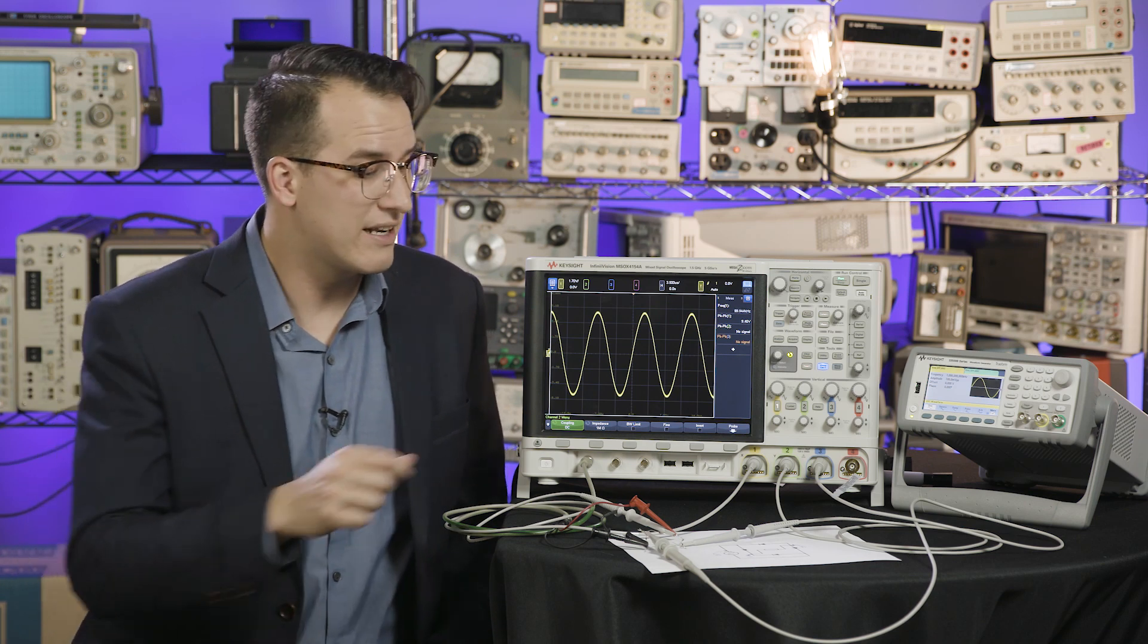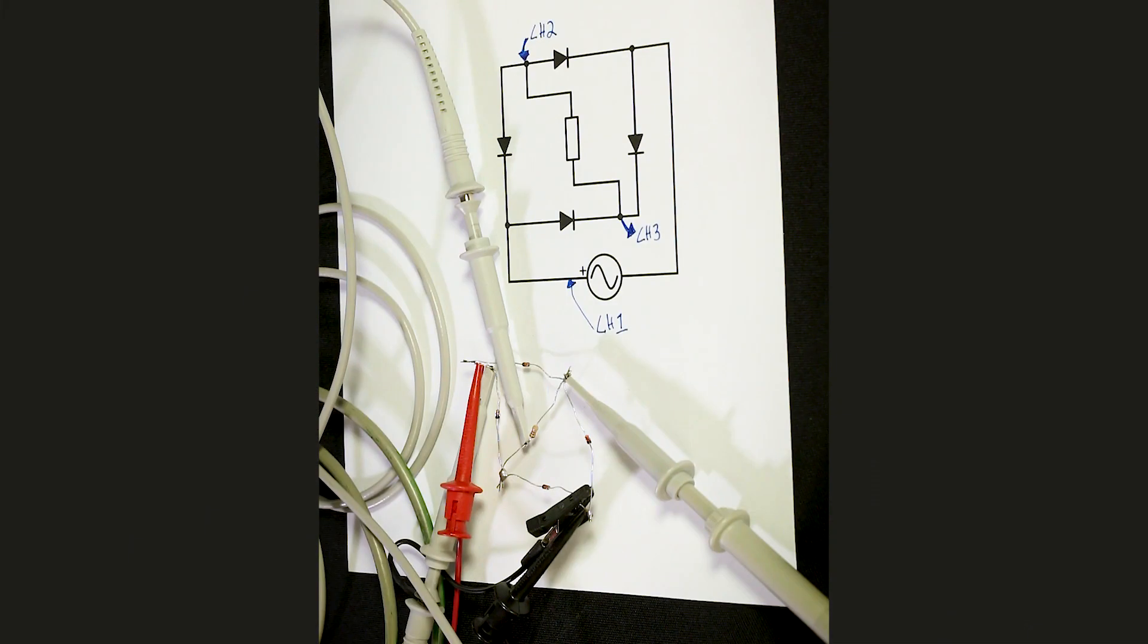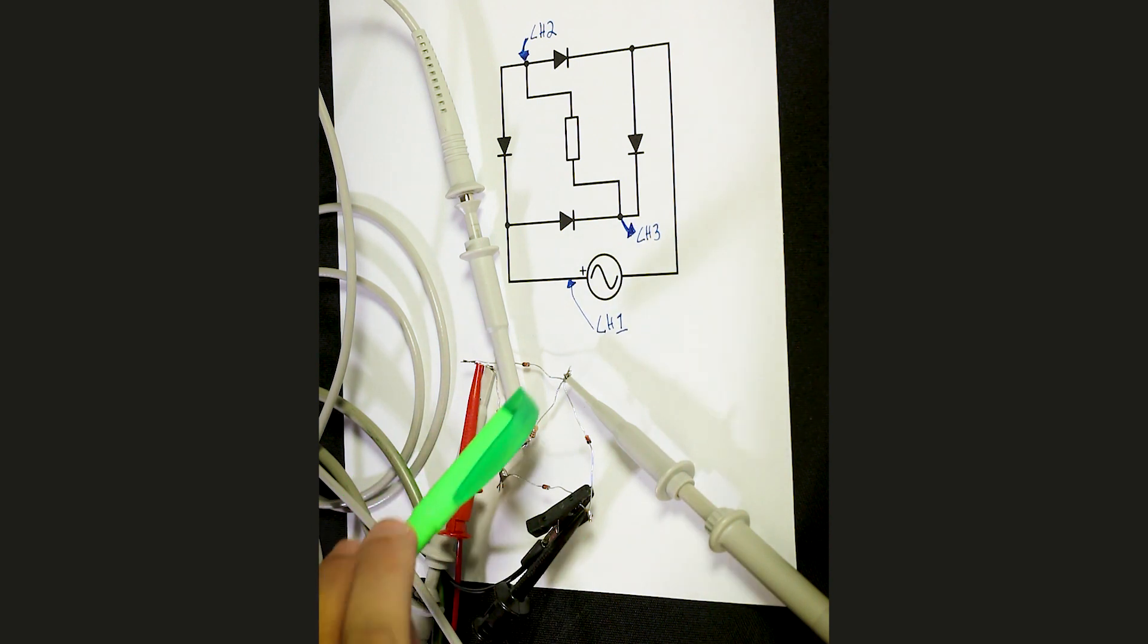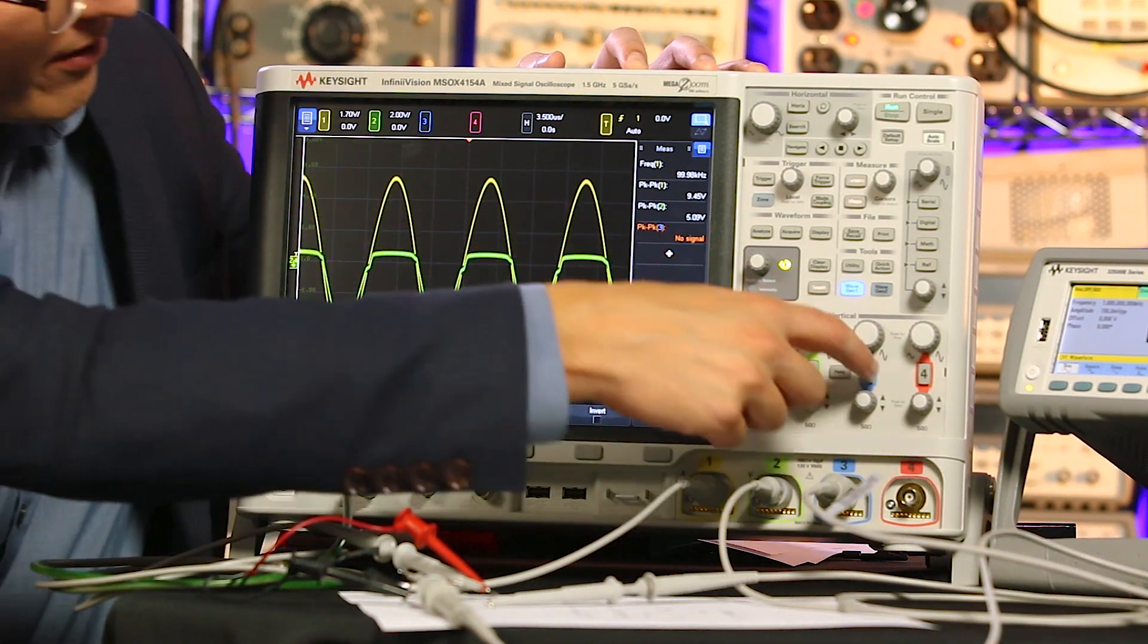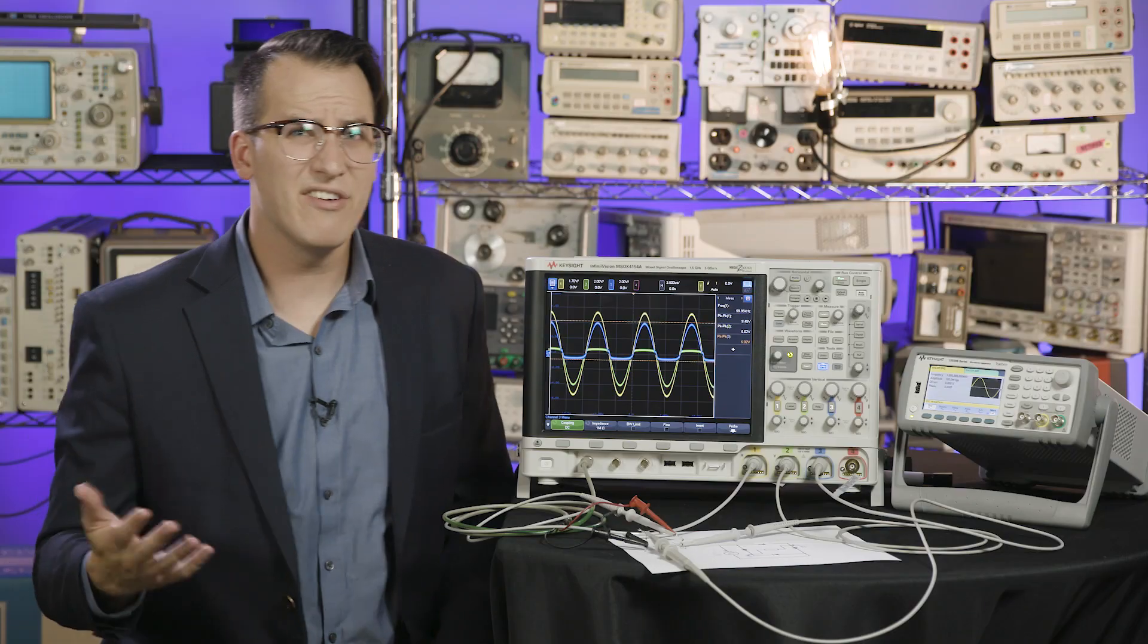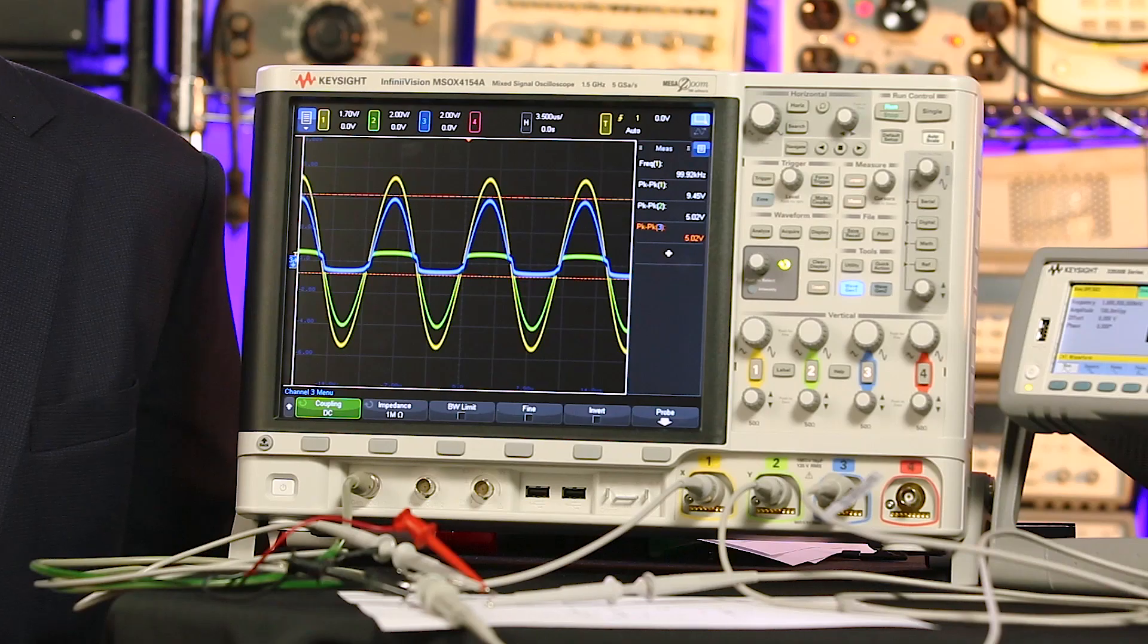Let's see what happens when we probe this signal with a single-ended probe connected here and here. Channel 1 is the input, and channels 2 and 3 are where we've probed. So, here's channel 2, and here's channel 3. This only looks like two sets of half-bridges, so what's happening?